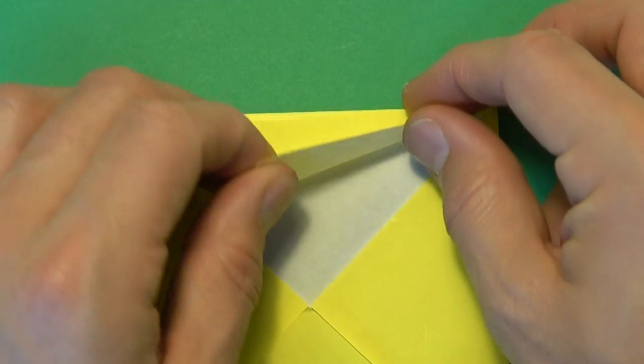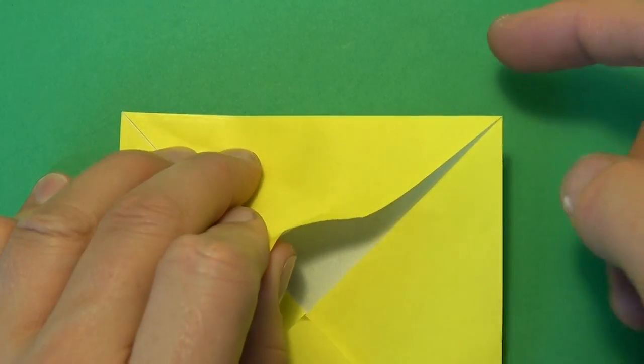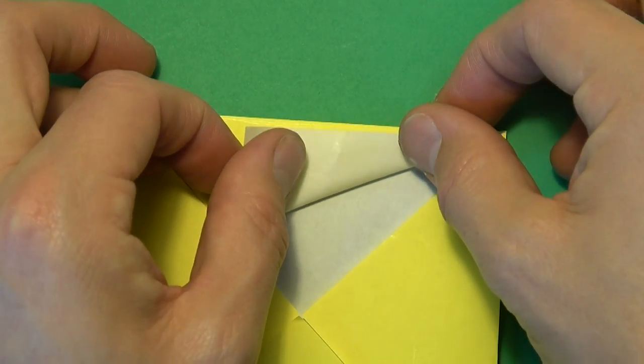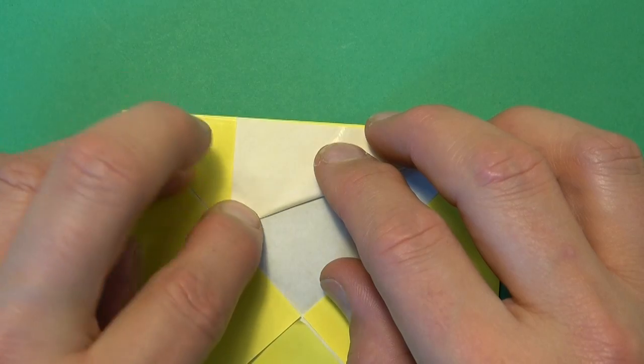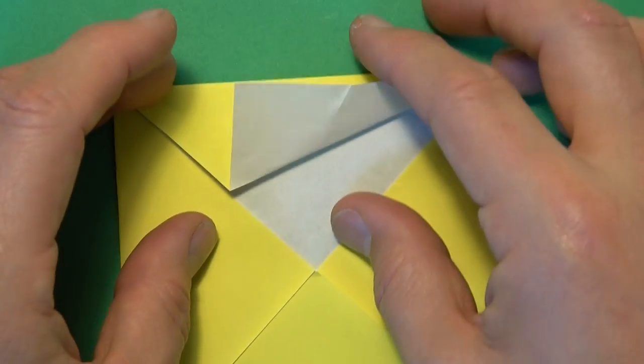And now let's fold the flap up again so that this edge aligns with this edge. And once again, we're not going to flatten the whole thing. Just flatten right there. And unfold.